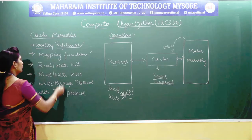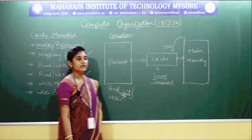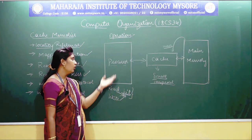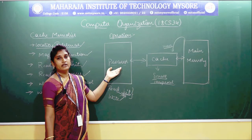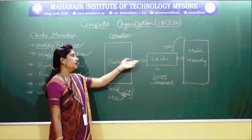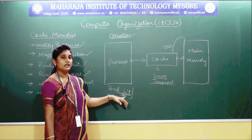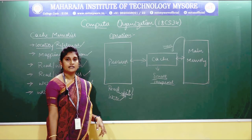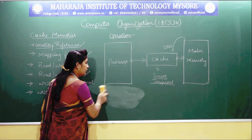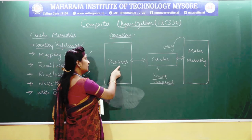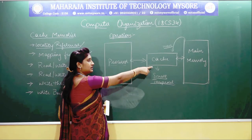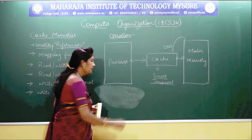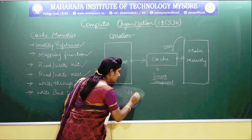You will also find the thing called read miss and write miss. As already discussed, if the data requested by the processor is found in cache, it will be called a hit. So what happens if you don't find it in cache? You have missed it. If whatever data is requested by the processor is not found in the cache memory, you will be calling it a miss.